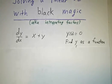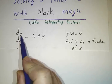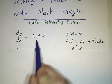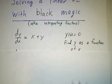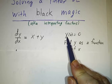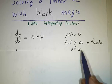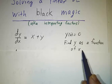Okay, so let's try to solve this particular equation, which we've seen already. dy/dx is x plus y. And let's suppose that we start with the initial condition y(0) = 0. We want to find y as a function of x for all values of x.